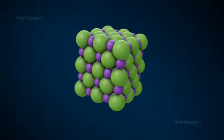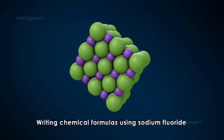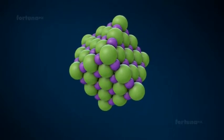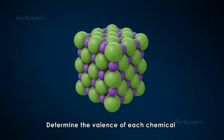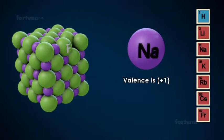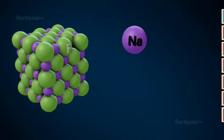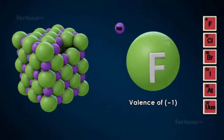Let's walk through the procedure for writing chemical formulas using sodium fluoride as an example. First, determine the valence of each chemical in the compound. Sodium is a member of group 1A, therefore the valence is plus 1. Fluorine has a valence of minus 1.